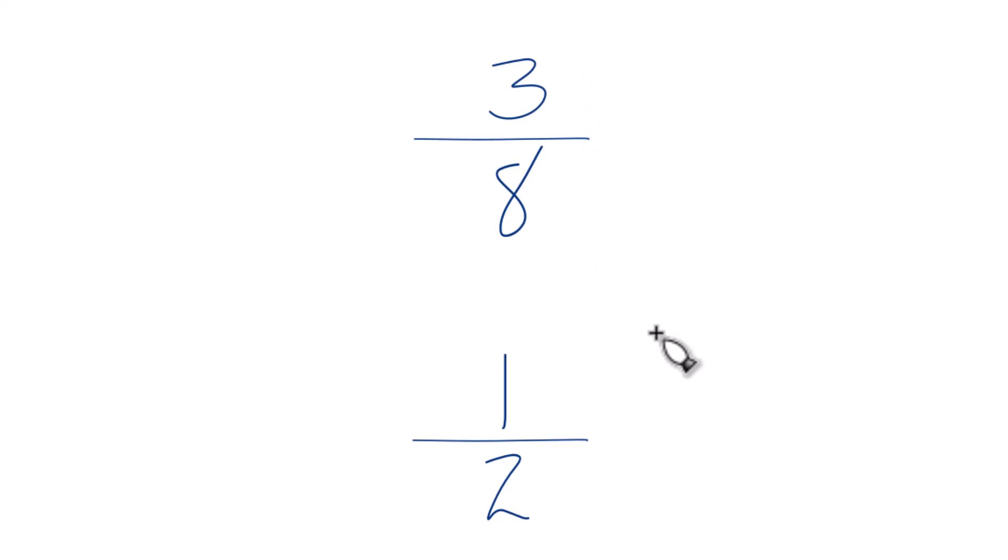Probably the way your teacher wants you to do is to find a common denominator. So right now we have eight and two. If we get these to be common, the same number, then we can just compare the numerators. That'll tell us if three eighths is bigger than one half.